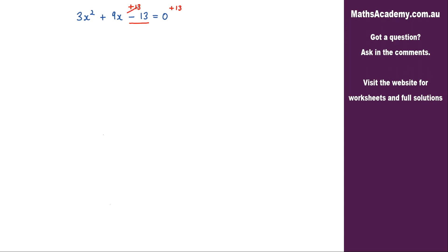Now this positive and negative 13s they'll cancel. So I'm left with 3x² + 9x is equal to 13. The next step is to look at the coefficient of the x squared term. I've got a 3 here but it needs to be a 1. To get a 1 there I would have to divide by 3.